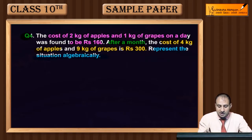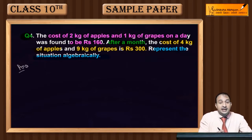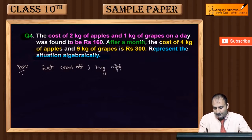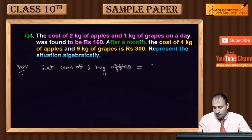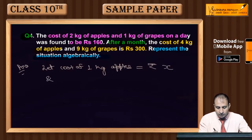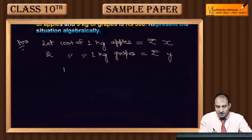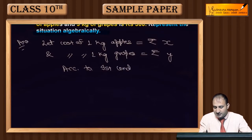To represent this algebraically, we will use linear equations in two variables. Let the cost of 1 kg apples be rupees x, and the cost of 1 kg grapes be rupees y.